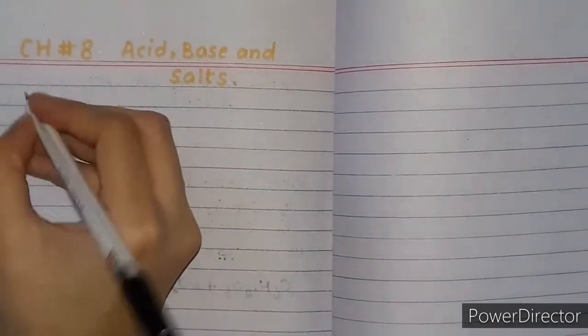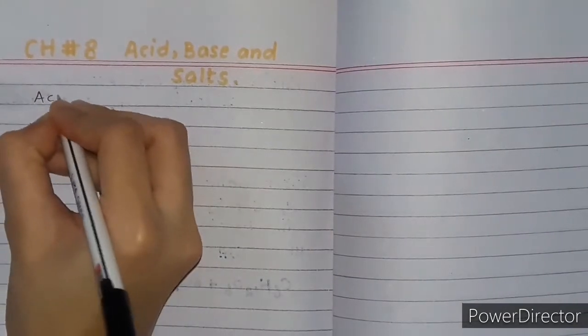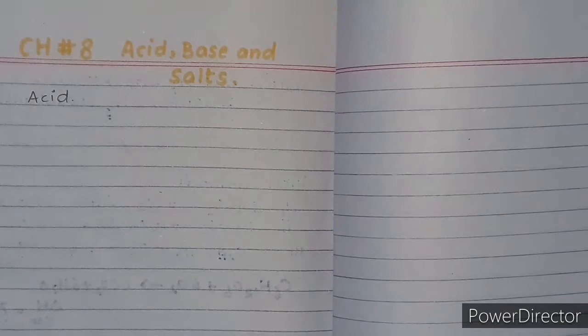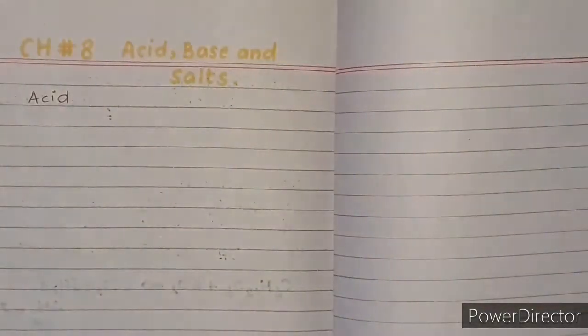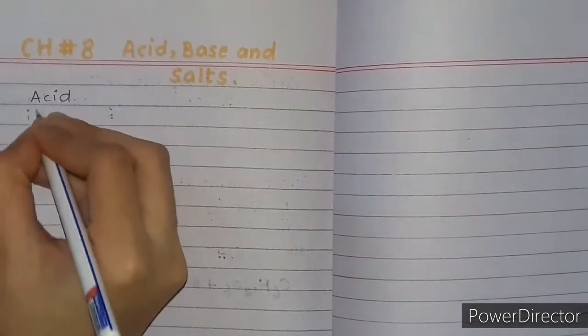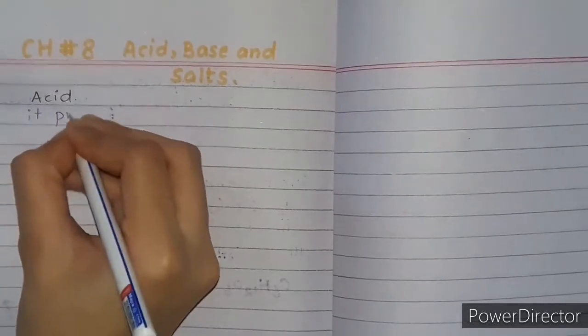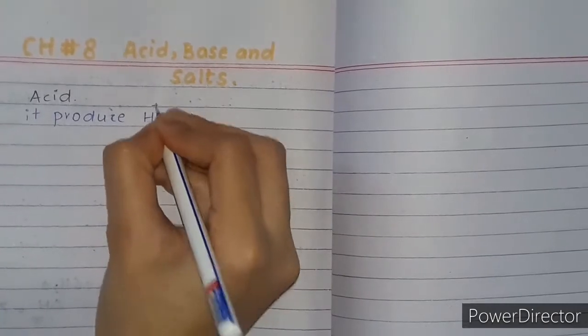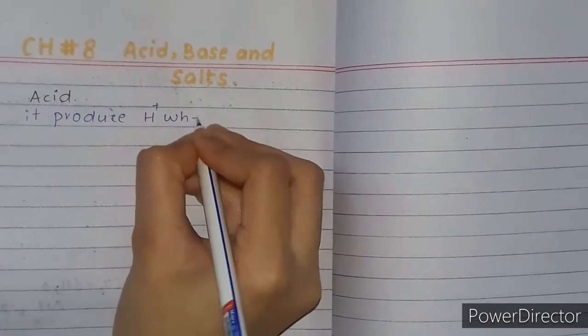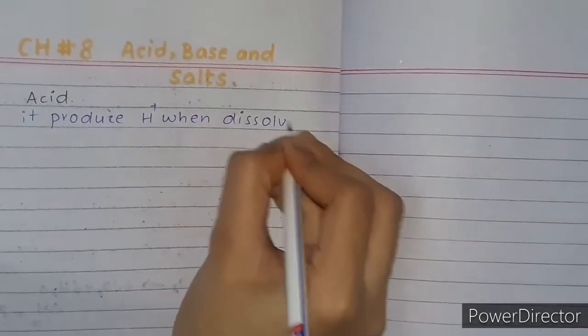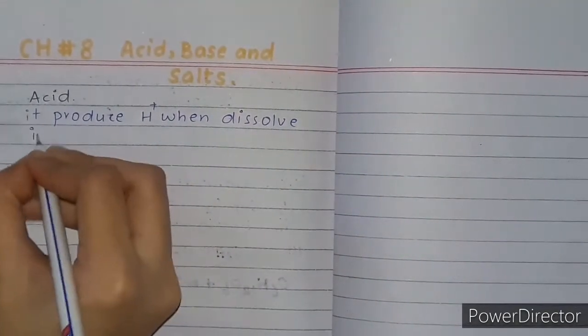First of all, we are going to study acid properties. What is acid? Acid, which is dissolved in water, will produce H ion. It produces H ion when it dissolves in water.